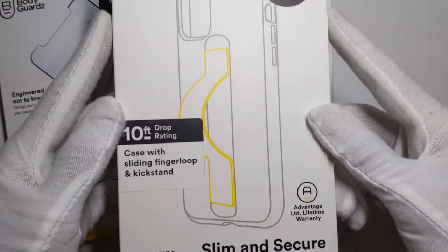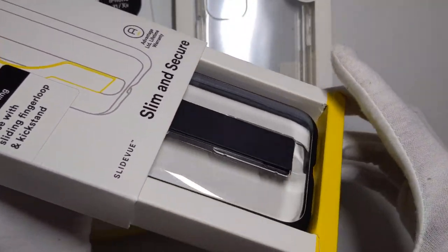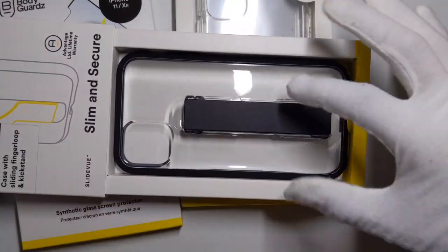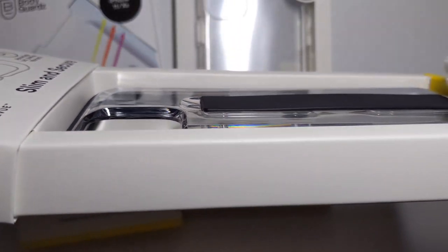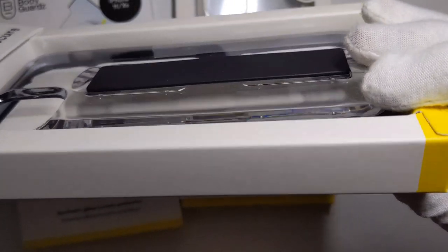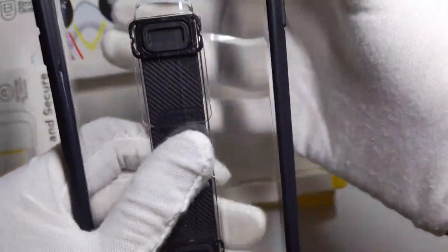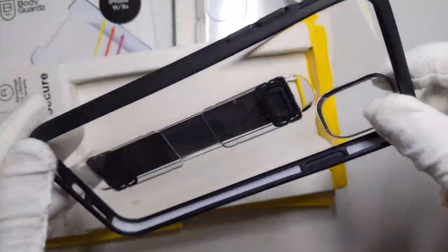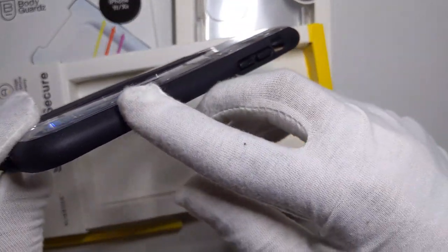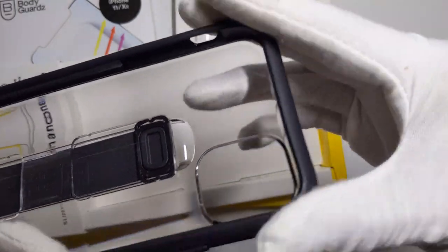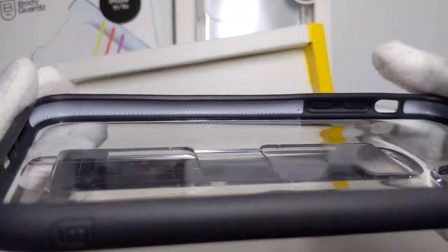Alright, so the first case we're looking at is a slide view, this is a slim and secure one from the iPhone 11. Look at that premium glass or plastic, I'm not sure which, but it looks really nice. Has nice bumpers, protection, very slim. You have the inside right there.